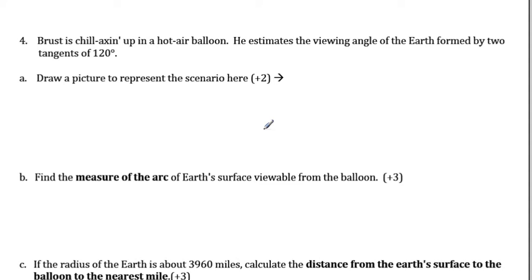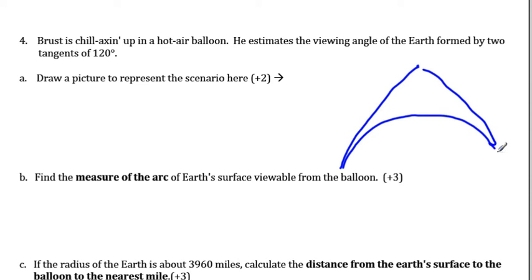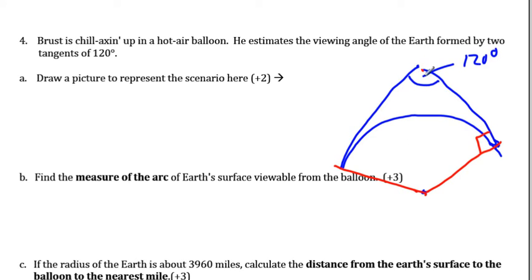Last application problem — all Pythagorean theorem! Brust is in a hot air balloon; he estimates the viewing angle formed by two tangents is 120 degrees. Drawing the earth with Brust above it, the angle between the two tangents is 120°. Drawing radii to the tangent points, each radius is perpendicular to its tangent, giving right angles. Drawing a line down the middle, half the viewing angle is 60°. Since tangent and radius are perpendicular (90°), the central angle here is 30°, and both sides are congruent, giving 30° and 60° on each side.